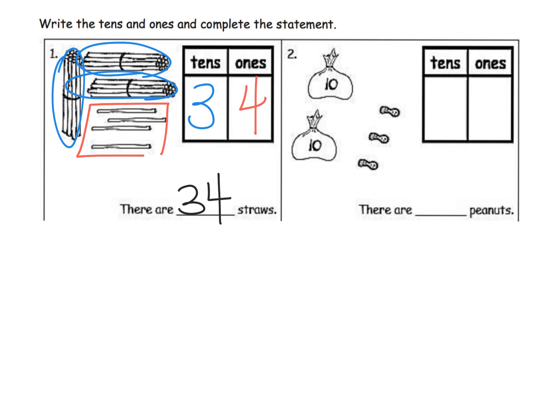We could say this as 34, but we can also call this three tens and four ones. That's really where we want our students to be thinking. We want students to be seeing 34 and saying the name 34, but we want them to think or see in their mind's eye three tens and four ones.